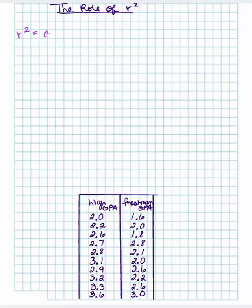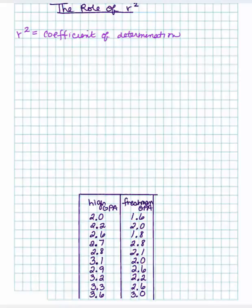r squared is called the coefficient of determination. Your calculator will give you r, and r squared is basically you take r and you square it. And that gives you the coefficient of determination.